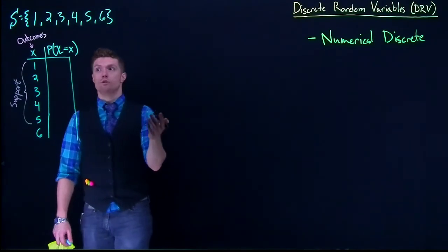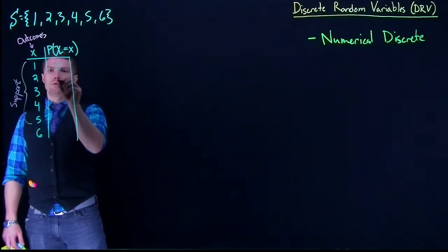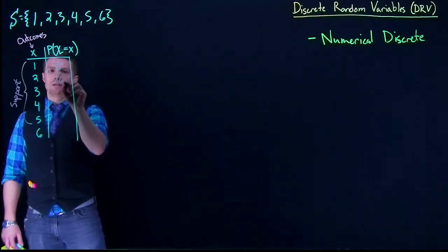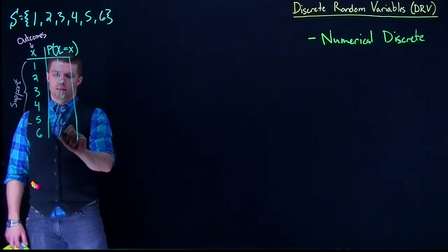That still holds true. We know that the probability for this first one is 1/6. For this next one, it's going to be 1/6. Next one, 1/6, and just moving our way on down.